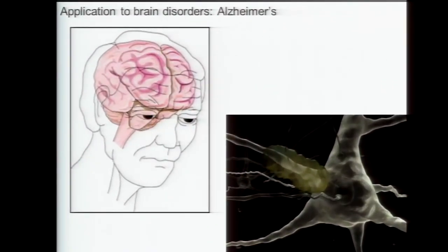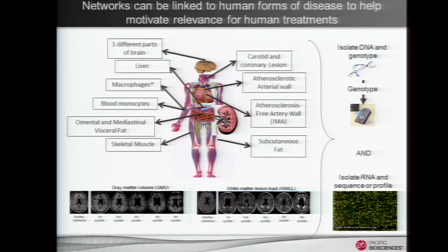The way we apply this to Alzheimer's disease — to take you through some of the steps — is we start with a human population looking at many tissues at once. In the case of Alzheimer's, we looked at three different parts of the brain. We had about 800 subjects from that study: roughly a third with Alzheimer's, a third with Huntington's, and a third non-demented individuals.